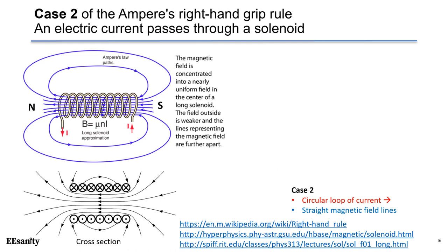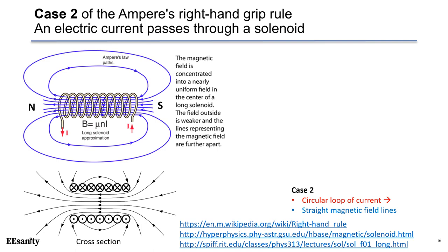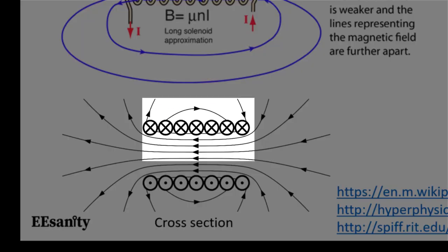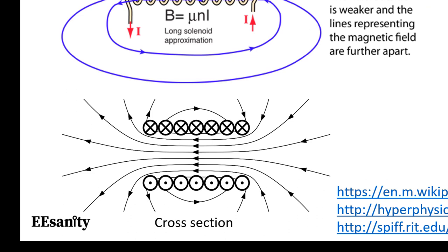Here is more explanation about the second case. As shown in the illustration, there is a current passing through a solenoid. A solenoid is a type of electromagnet formed by a spiral coil of wire that generates a controlled magnetic field. Taking a cross-section of the solenoid, we can see that the top windings are flowing into the paper plane while the bottom windings are flowing out of the paper plane. For each turn of the winding, we apply the right-hand rule and find that the magnetic fields inside the windings all sum up and point to the left. Therefore, a strong magnetic field is generated inside the solenoid.